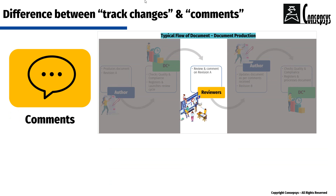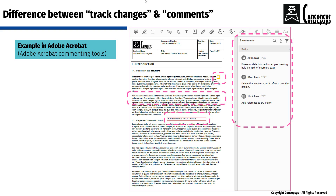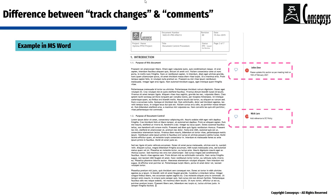Comments happen during the review cycle. Reviewers go through the document and make comments asking the author to either change, add, or delete some of the content. We have an example here in Adobe Acrobat where reviewers have commented using the Adobe Acrobat commenting tools — we can see who said what and when. Another example, this time in Microsoft Word using the comments function. So these are comments.